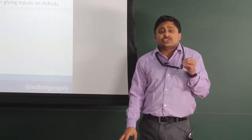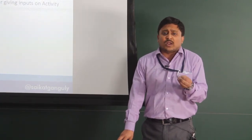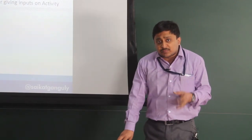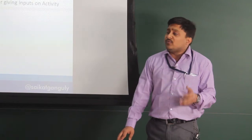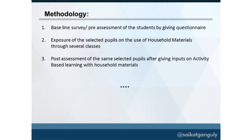We have made 15 distinct tools for physical science using just one or two disposable syringes, which is a very low-cost material, and we have performed 15 distinct experiments with my selected group of students in physics and chemistry. My methodology is divided into three parts: a baseline survey with pre-assessment via questionnaire, exposure of selected pupils to household materials through several classes conducted by the ICON model through a constructivist approach, and post-assessment after giving inputs on activity-based learning.